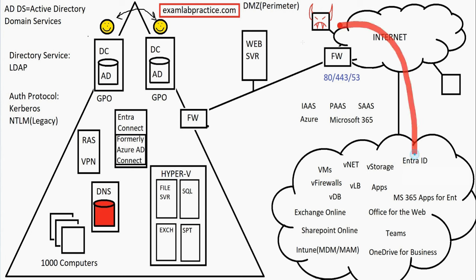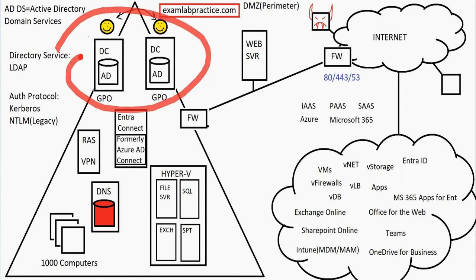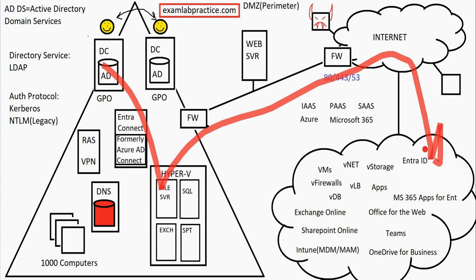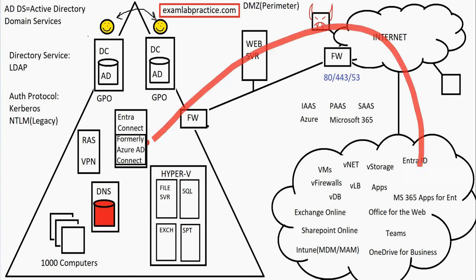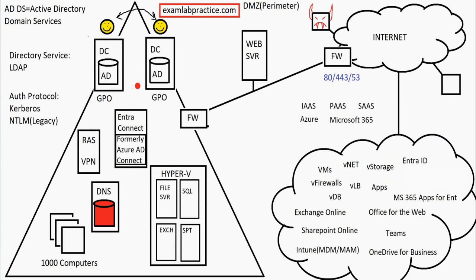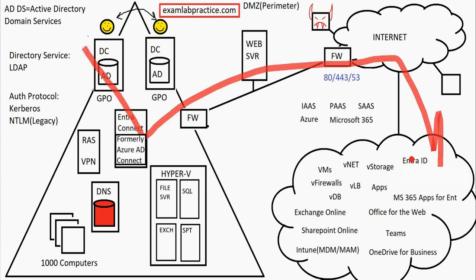Entra Connect syncs users out, but it won't sync users that are created in the cloud back to on-premises — you cannot currently do that. But any users created on-premises can be synced out, and if they change their password in the cloud, that will sync as well.